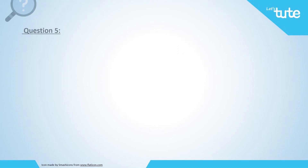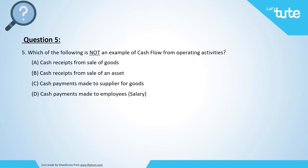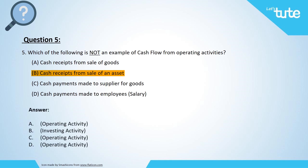Question five: Which of the following is not an example of cash flow from operating activities? Option A: cash receipts from sale of goods. Option B: cash receipts from the sale of an asset. Option C: cash payments made to a supplier for goods. Or Option D: cash payments made to employees in the form of salary. The answer is Option B — cash receipts from sale of an asset is an example of an investing activity. Options A, C, and D are examples of operating activities.